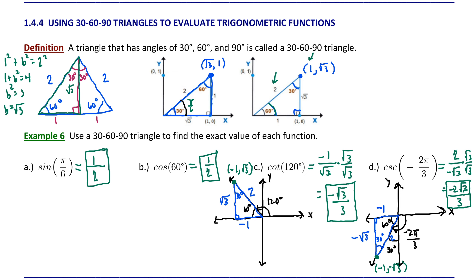This is a straightforward process as long as you have a very good understanding of a 30-60-90 triangle. Make sure you know how to set one up in any position and use it to find a point on the terminal side. You also need to know the definitions of your six trigonometric ratios. At this point, we know how to find trig ratios for quadrantal angles, for multiples of 45 degrees or pi over 4, and now for multiples of 30 or 60 degrees, or pi over 6 or pi over 3. Practice is essential to master this skill.